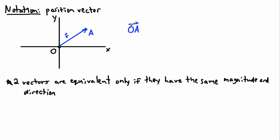This vector joins the point O at the origin and the point A, which has some coordinates — we can find the x and y coordinates. The vector that joins them we say is defined as r, written with an arrow over it. Sometimes it's drawn really bold, but I think it's hard to draw something in bold, so I prefer the arrow notation.